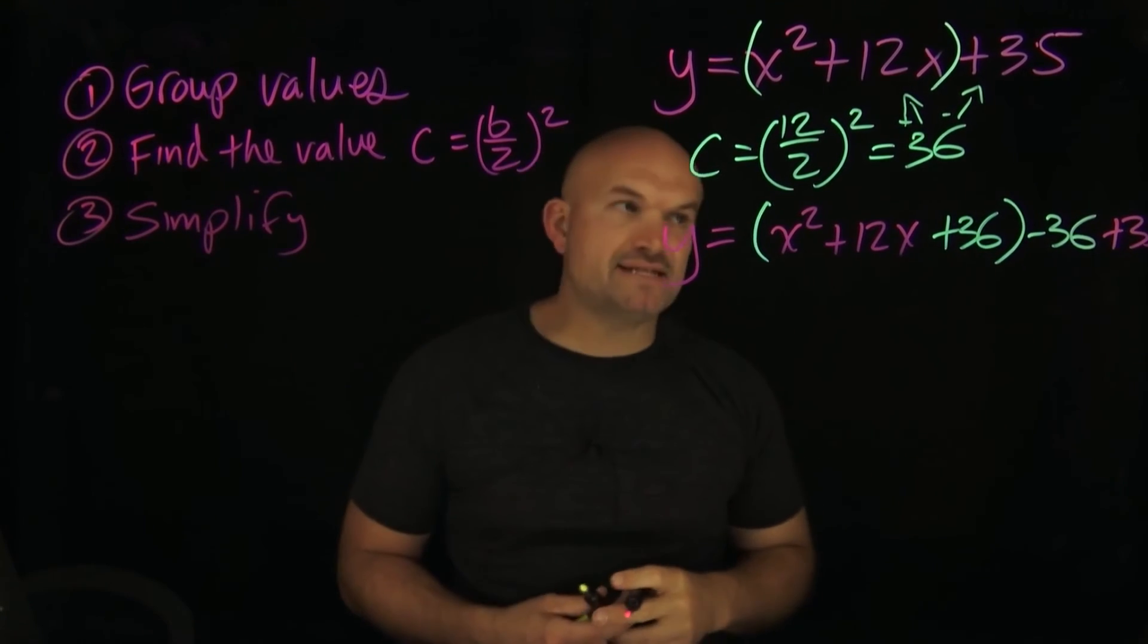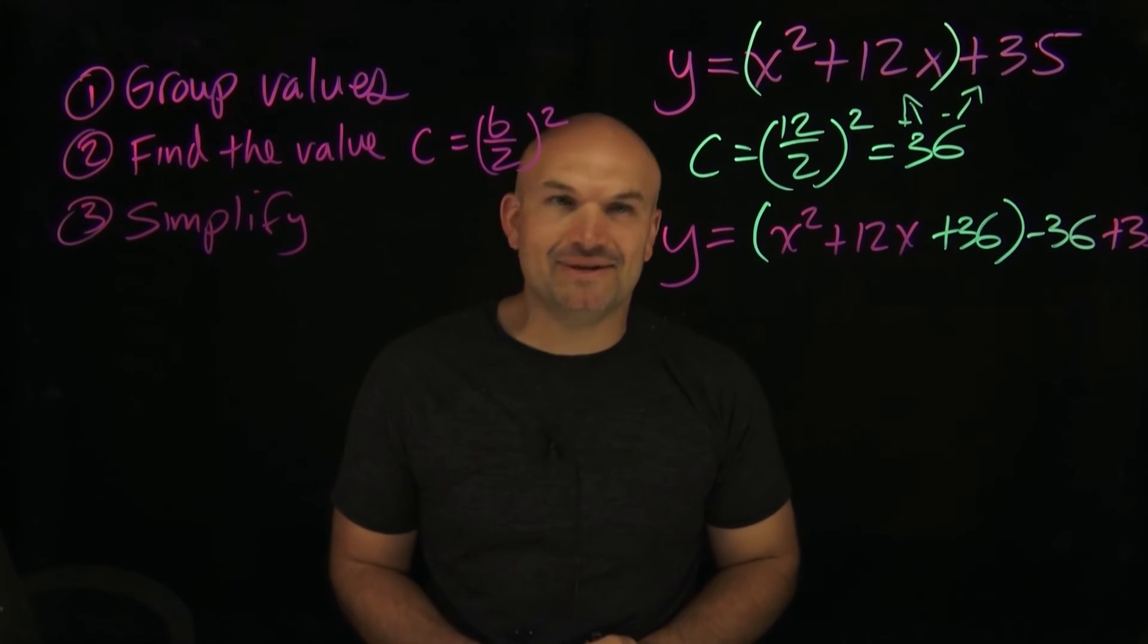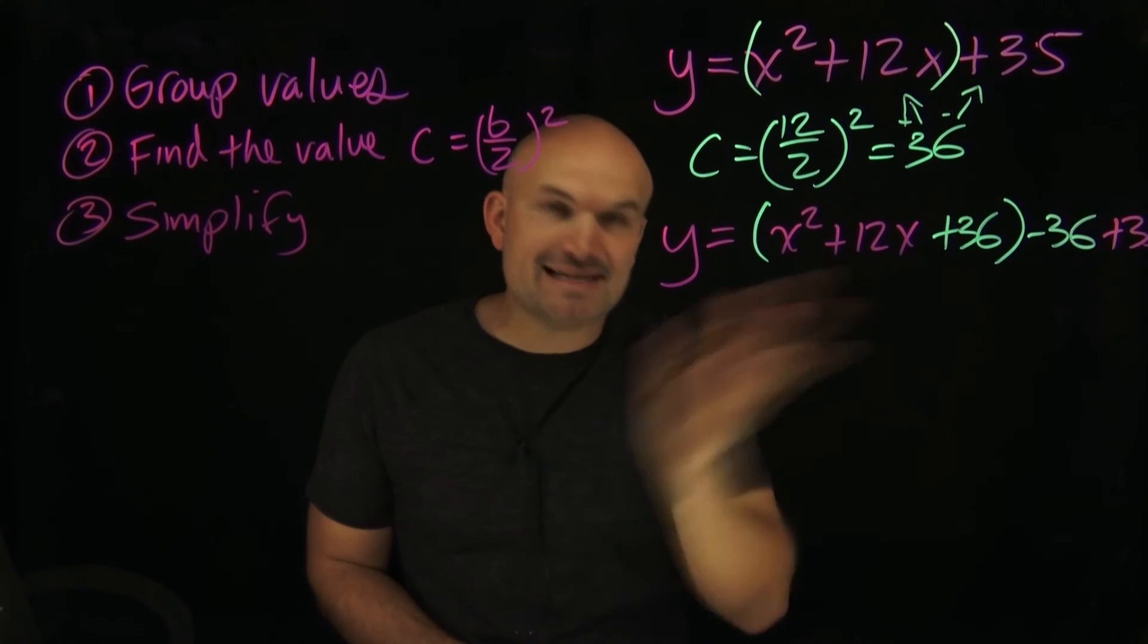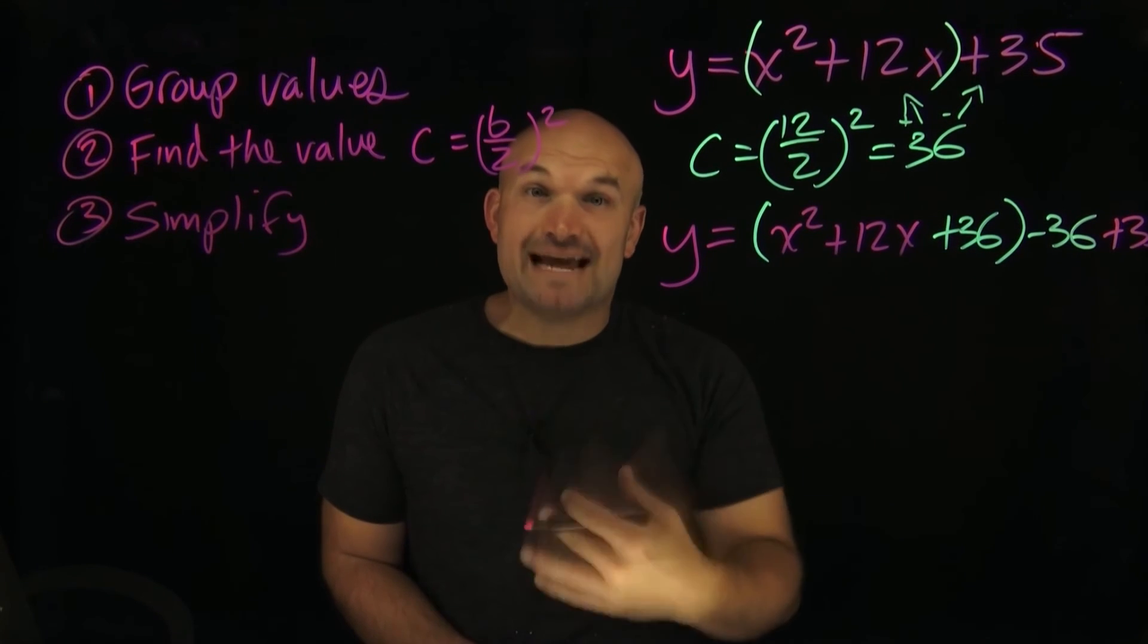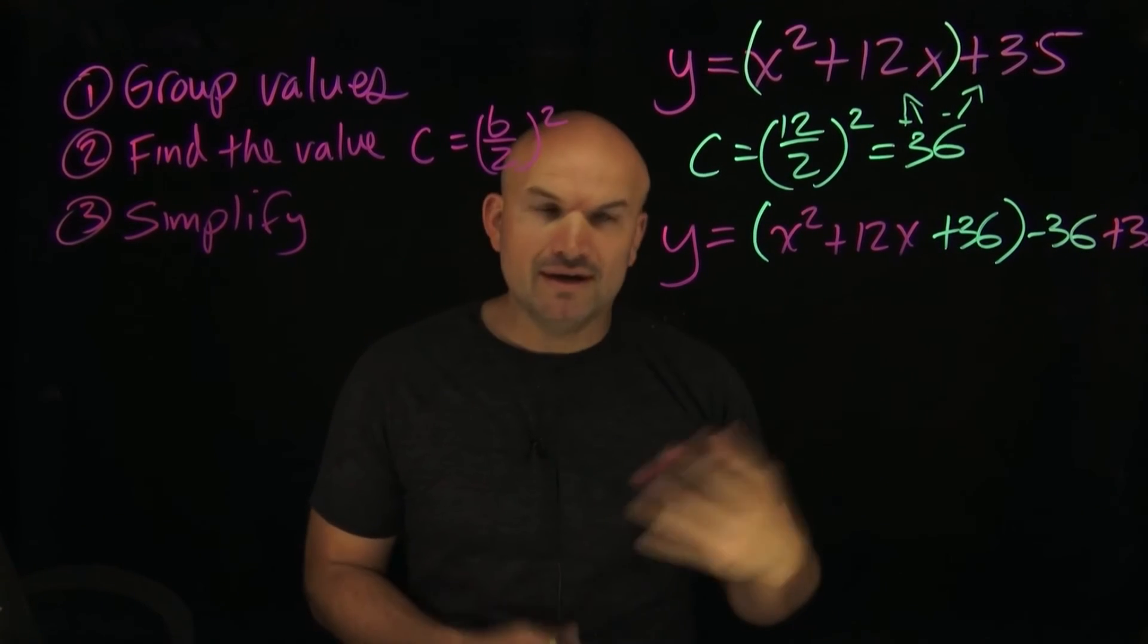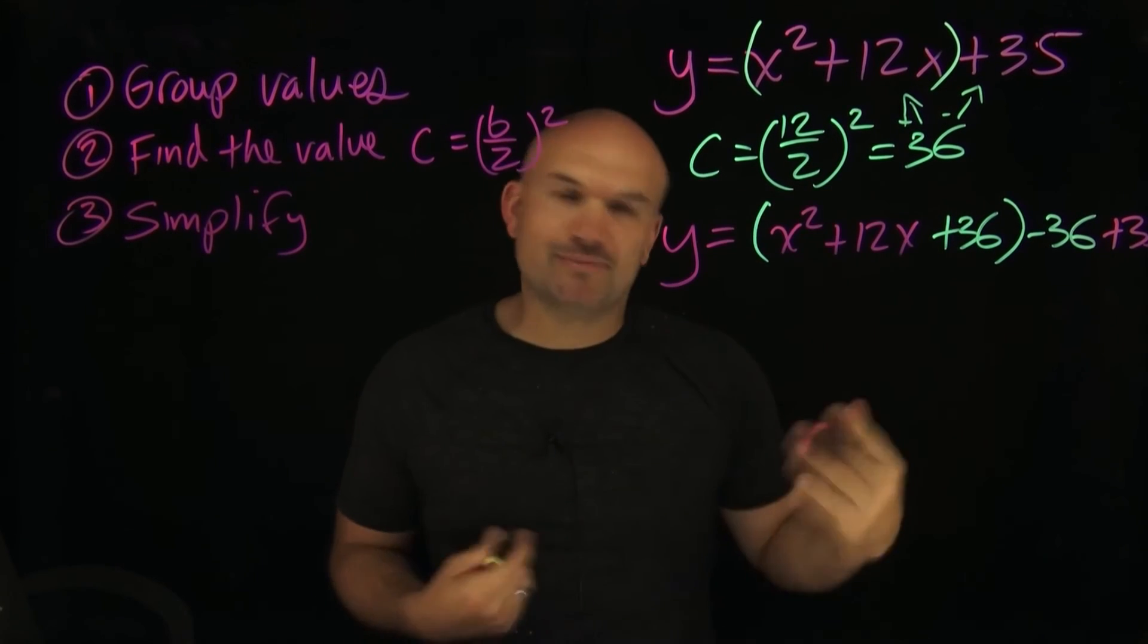Now when I'm talking about simplifying, basically what I'm talking about is simplify into our vertex form. This is a perfect square trinomial. So what we need to do is factor it, knowing that it's going to be the same term multiplied by itself.